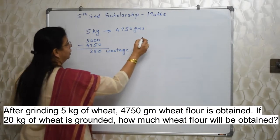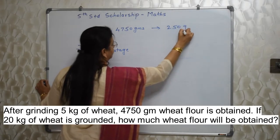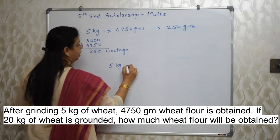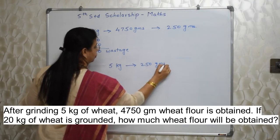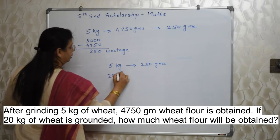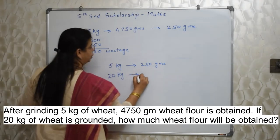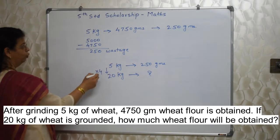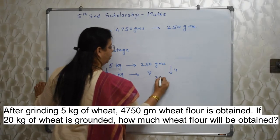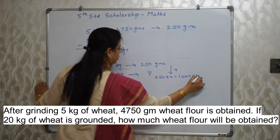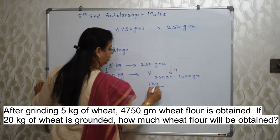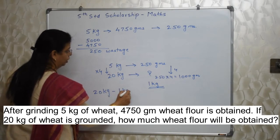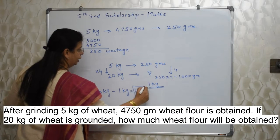So whenever 5 kg wheat is there, wastage is 250 grams. Now they are taking 20 kg wheat — how much wastage? Compare 5 and 20: it is into 4. So obviously this is also into 4. So 250 into 4 is 1000 grams — that is 1 kg of wastage. So: wheat is 20 kg, wastage is 1 kg, flour obtained is 19 kg.